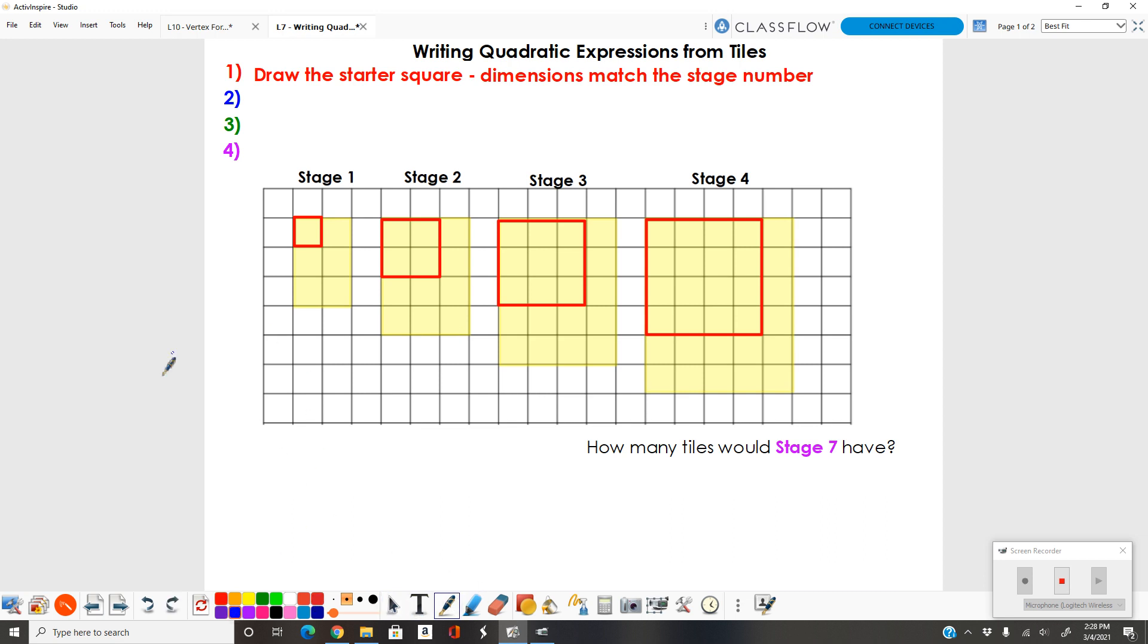The second step is going to be to label your starter square. We're trying to find our areas here. When we label our starter square, we're going to label each side x, because when we find the area of a rectangle, we're looking for length times width. X is going to represent our stage number. In stage 1, this x is a 1 by 1. In stage 2, this x represents a 2 by 2 square. Stage 3, x is 3, and so on.